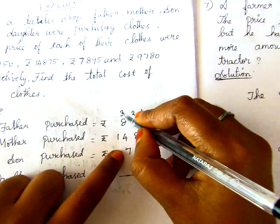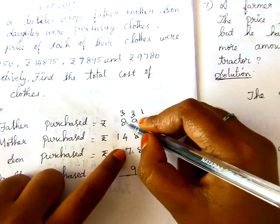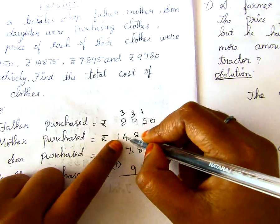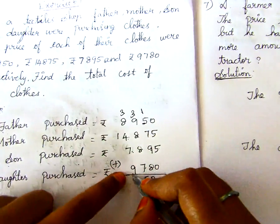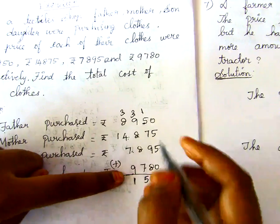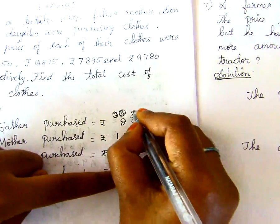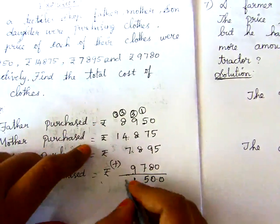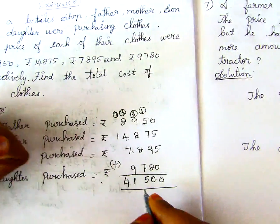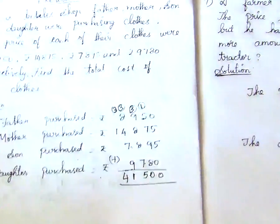Next, 3 plus 7 is 10. 10 plus 8 is 18. 18 plus 4 is 22. 22 plus 9 is 31. Write 1, carry 3. Next, 3 plus 1 is 4. So the total amount of purchase is Rs. 41,500.